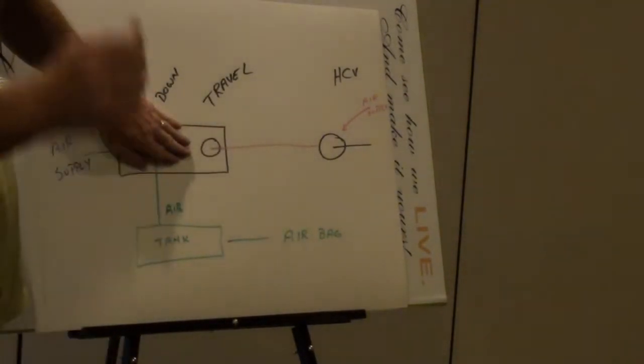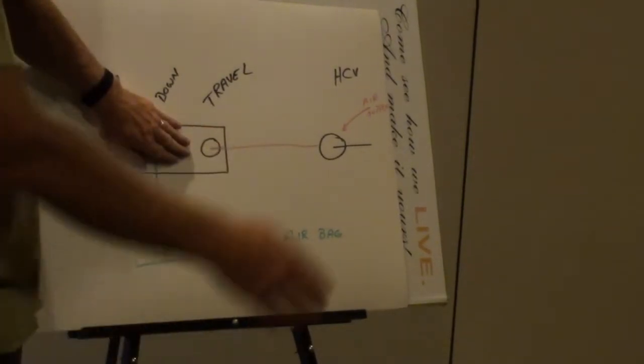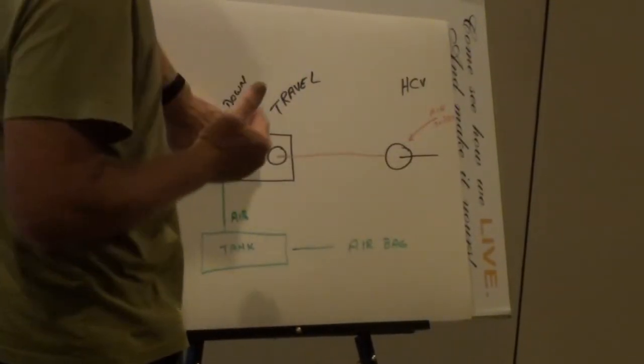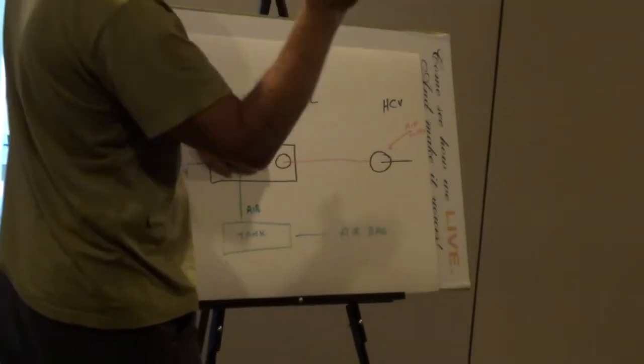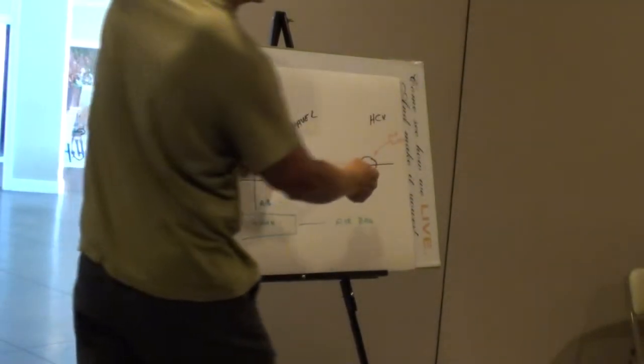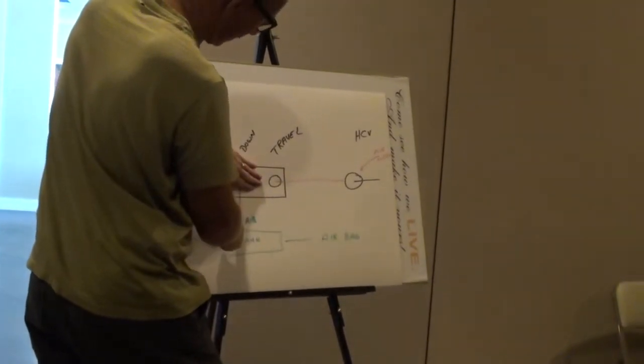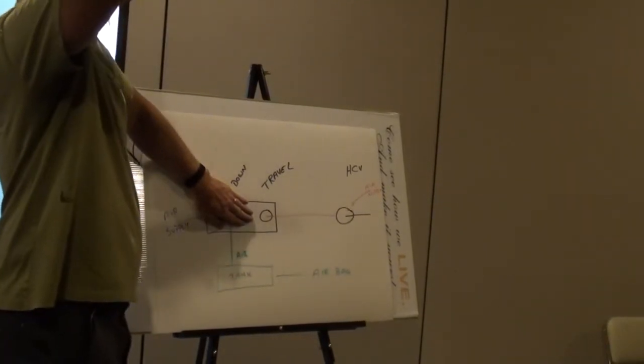So now, the ignition is on, this valve is open. We talked about what happens. Alright, the coach is low. The arm comes up, it admits air through the height control valve. Comes through the six pack, air goes into the tank, air goes into the airbag, airbag inflates, coach raises.